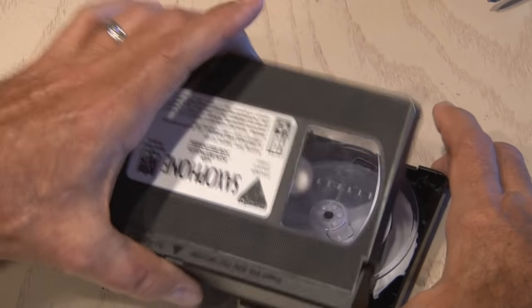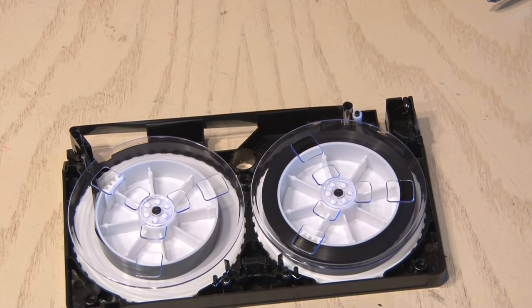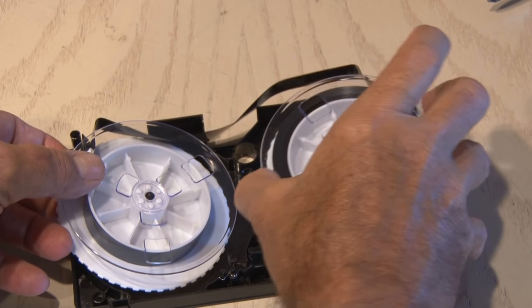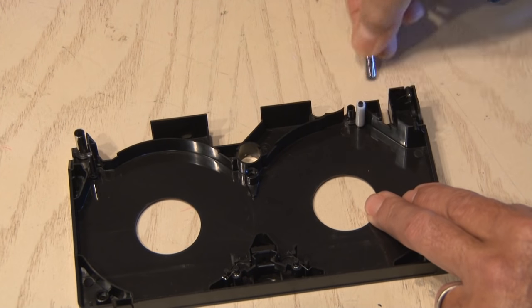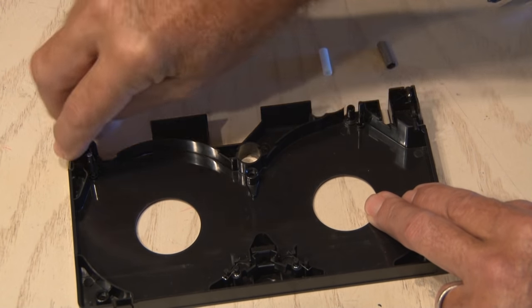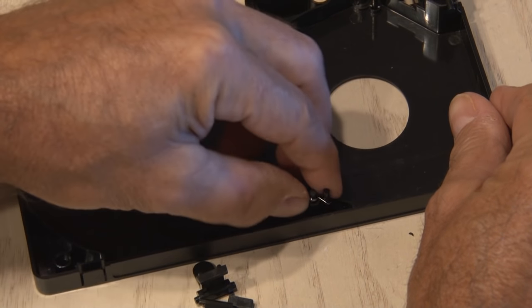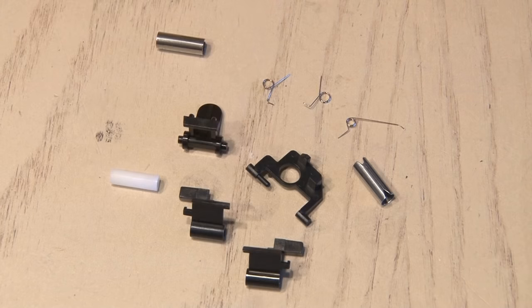Okay, once all the screws are out, we're going to open up the case, and inside you'll see the take-up reel and feed reel for this classic VHS tape. We'll carefully remove each of those reels and set them aside, and then we're going to remove all the little plastic pieces inside this case. There's roller guides and all kinds of little parts that we'll hang on to. You never know, might need them for another project down the road.